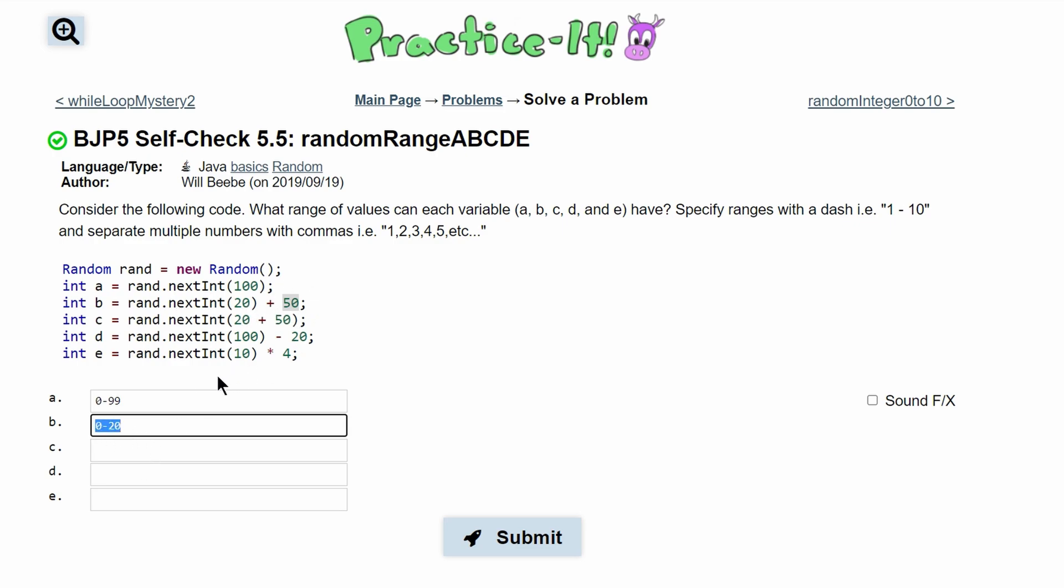And with this plus 50 we're actually starting at 50, and then we are adding 20 onto that. So that means we're going to go to 70, but we don't touch 70 because we don't touch what's in here. So we're going to end at 69.